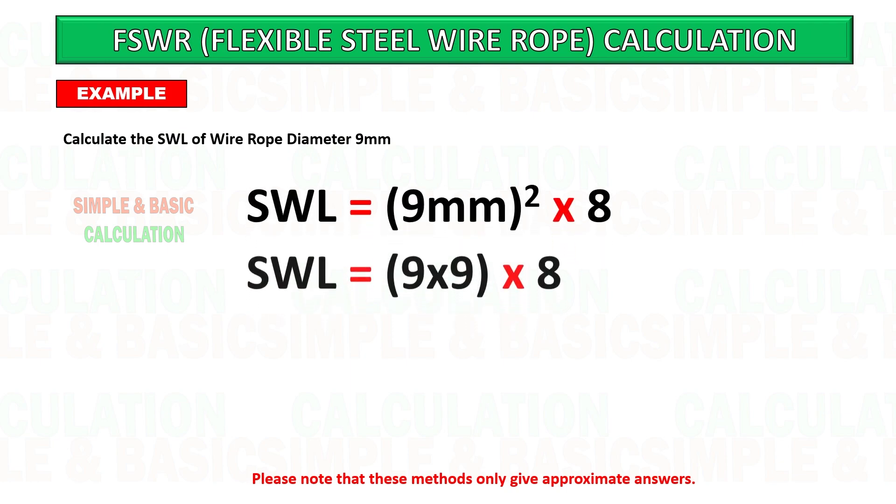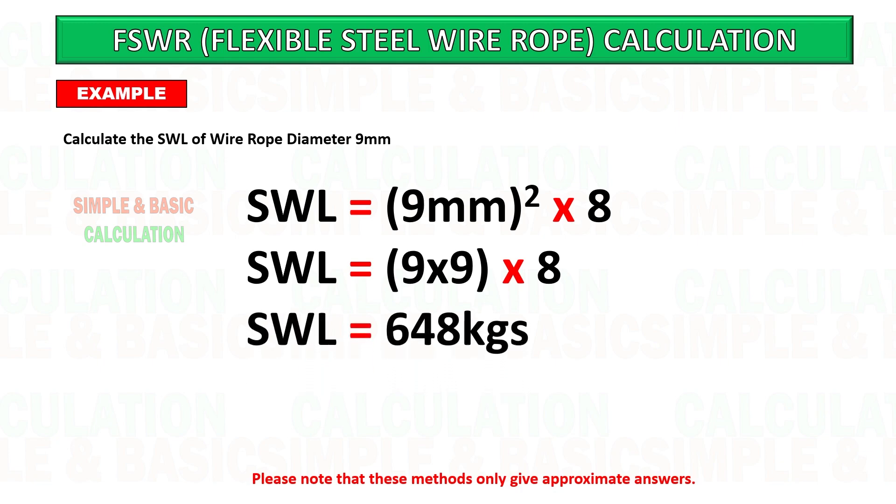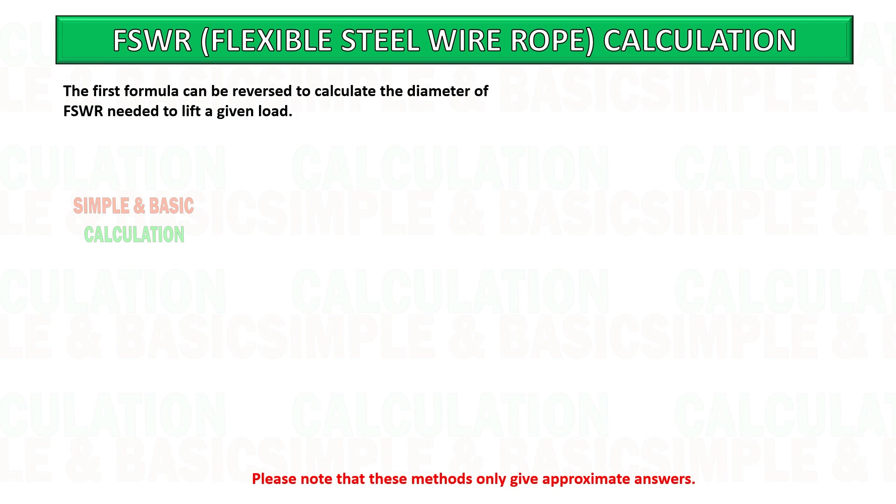This is formula number three. This is to calculate the required diameter of the wire rope based on the given weight.